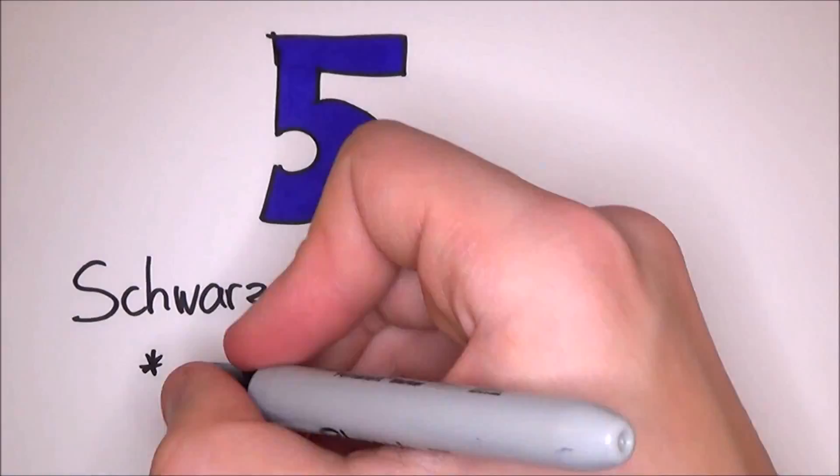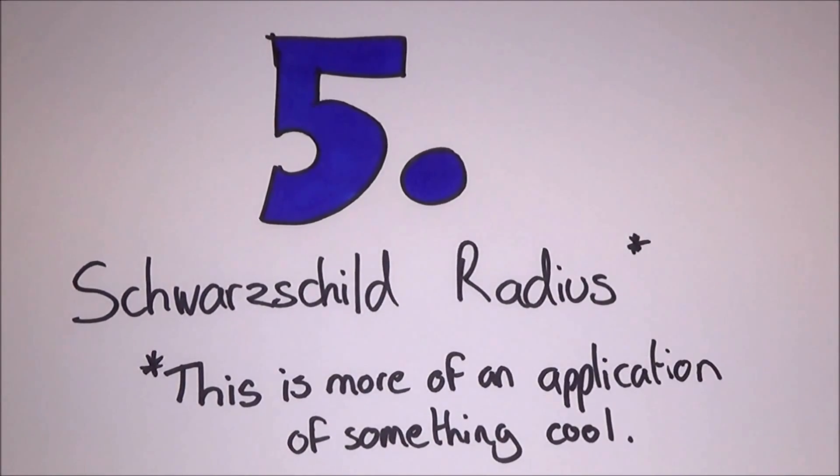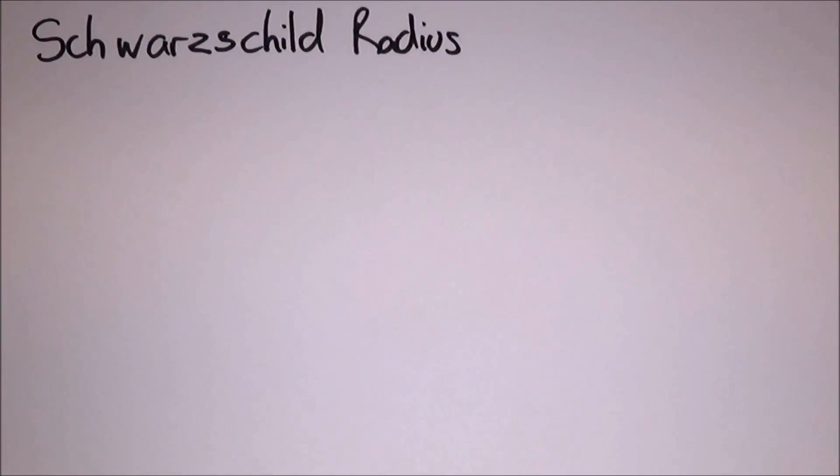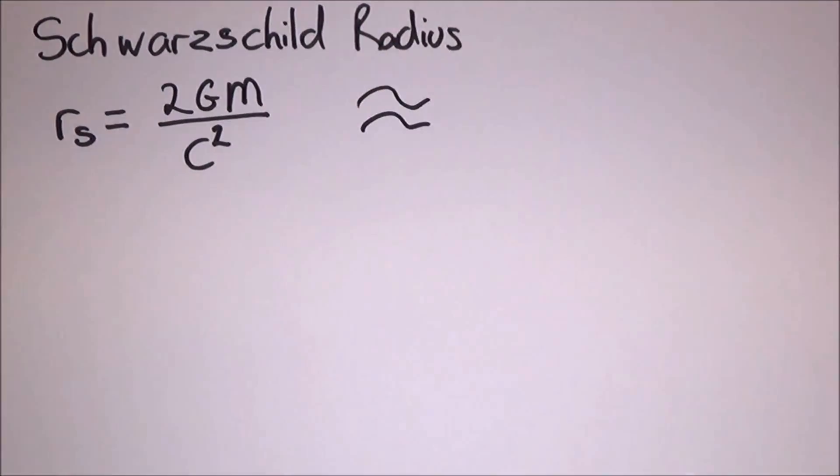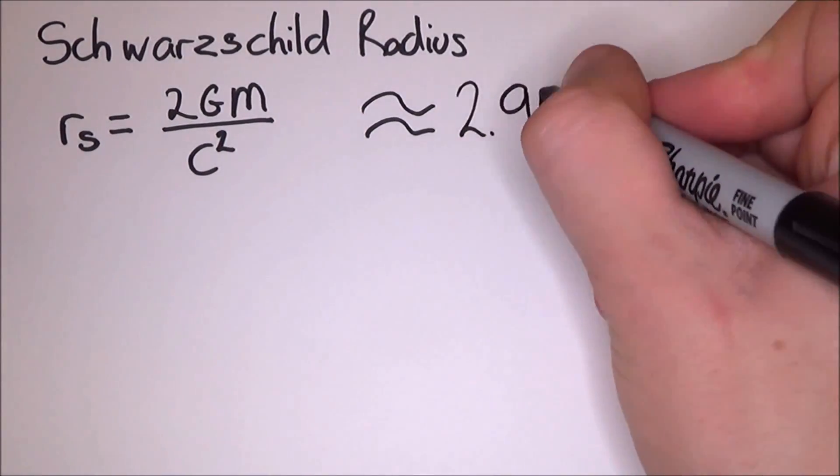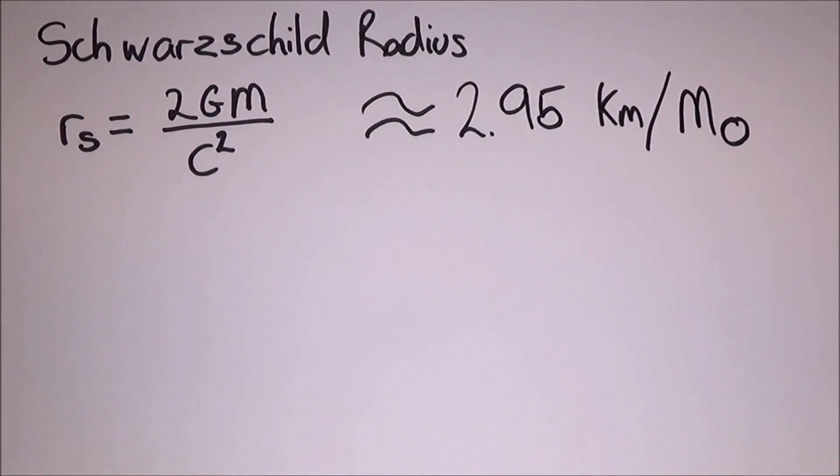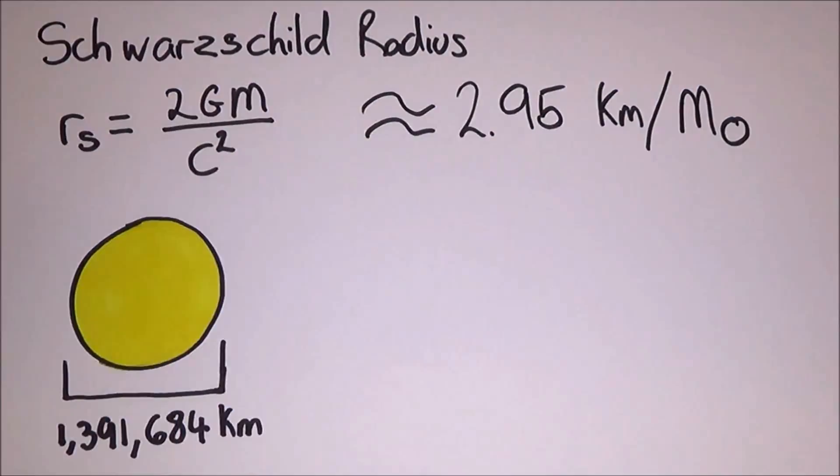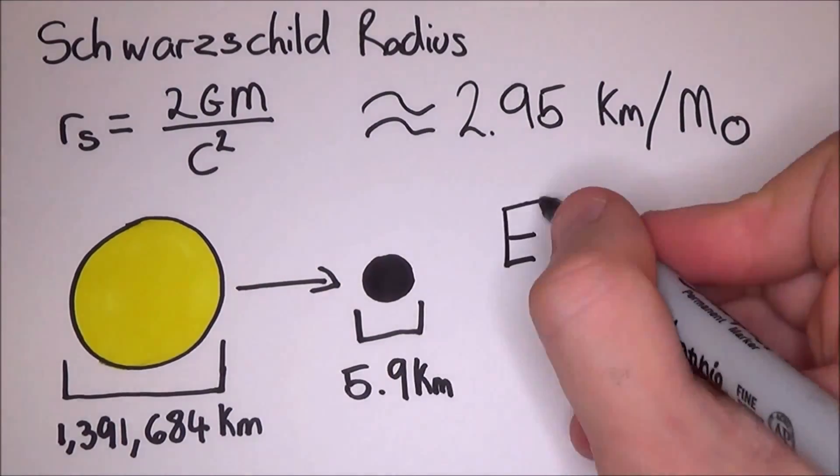Number 5 is the Schwarzschild radius. This is less about an actual feature of the universe, more about what would happen if you applied it to somewhere. Oh, I don't know, say Earth. The Schwarzschild radius is the radius in which something will become a black hole. It is defined by rs equals 2gm all divided by c squared. It is about 2.95 km per solar mass. That would mean if the sun was squashed to 5.9 km in diameter, it would be a black hole.